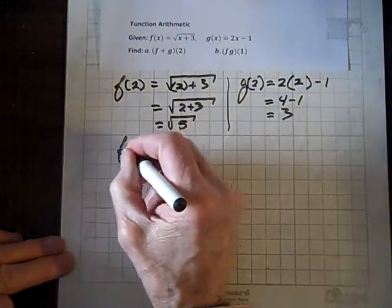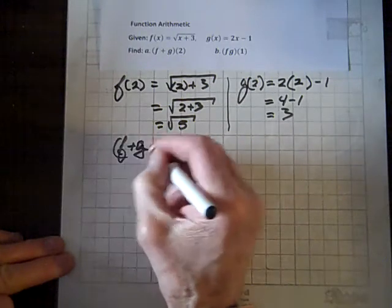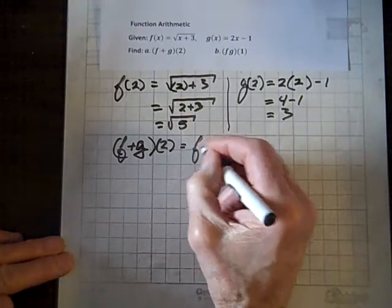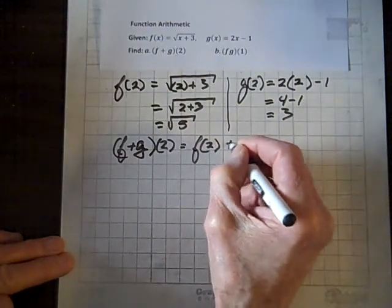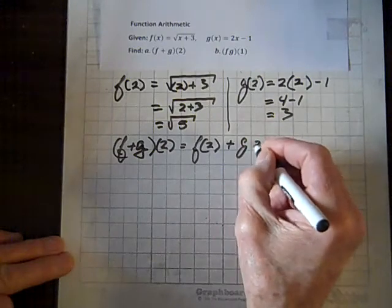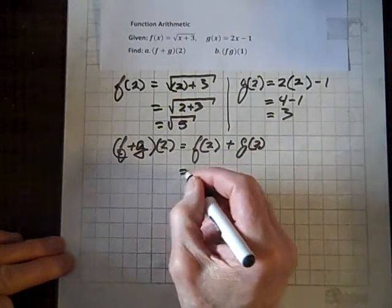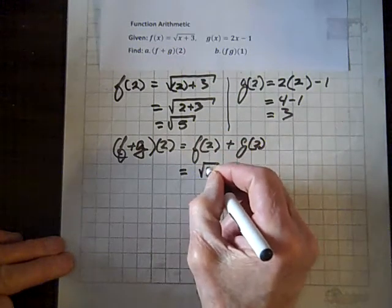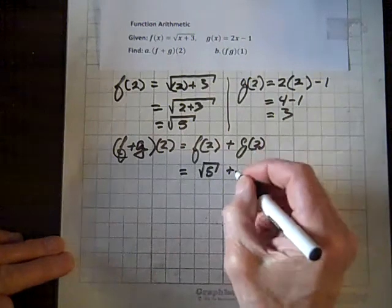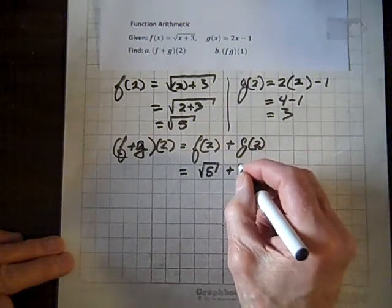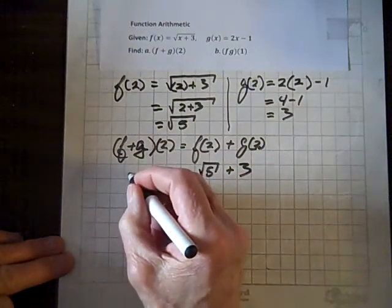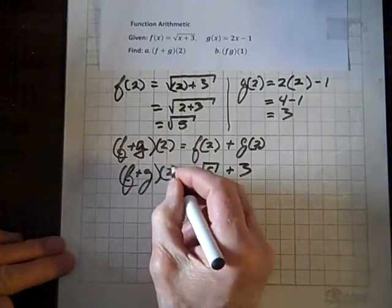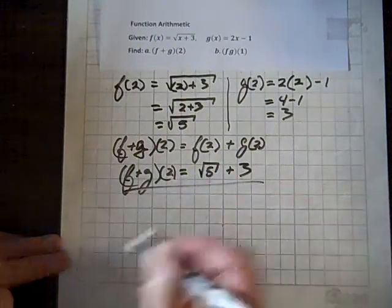f plus g of 2 simply means f of 2 plus g of 2. We can substitute for f of 2 square root of 5, and for g of 2 we can replace that with a 3. So there is f plus g of 2. It's square root of 5 plus 3. And we're done.